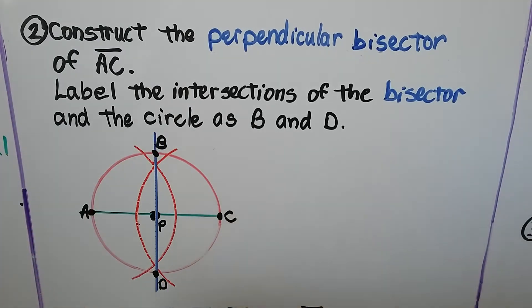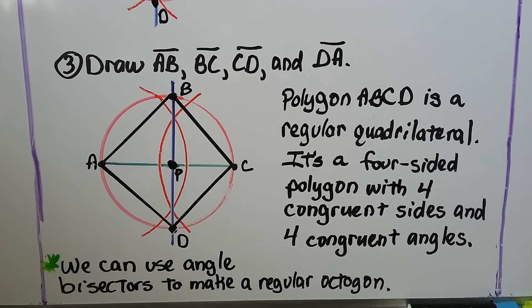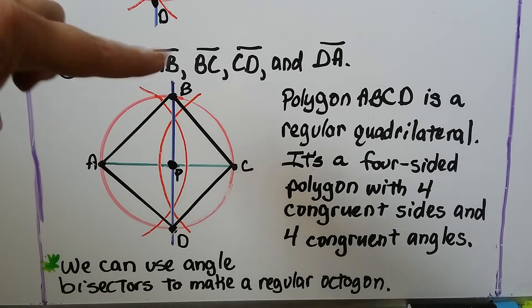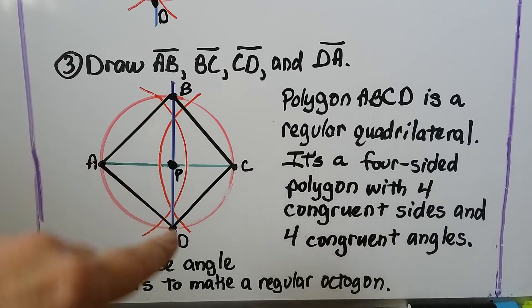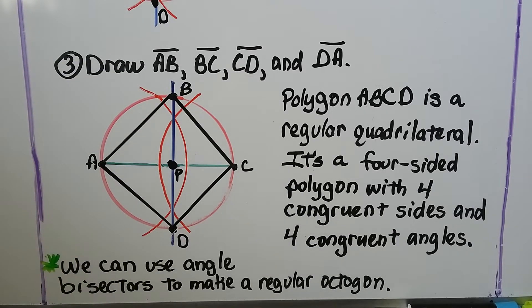We can label that B and the bottom one D. Now all we have to do is draw segments AB, BC, CD, and DA, and we have polygon ABCD. It's a regular quadrilateral—a four-sided polygon with four congruent sides and four congruent angles.